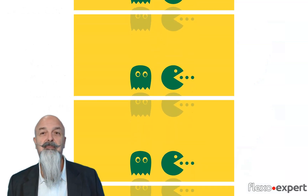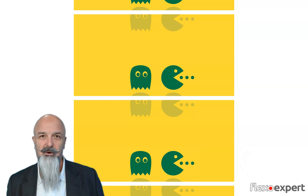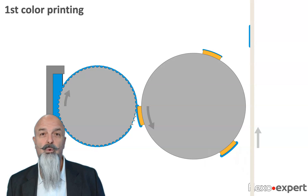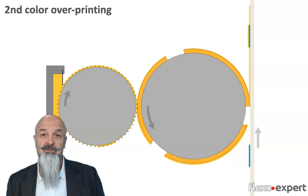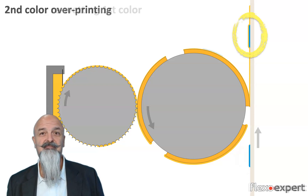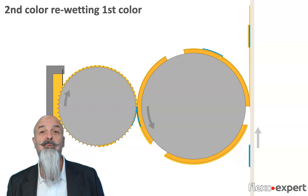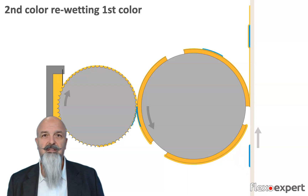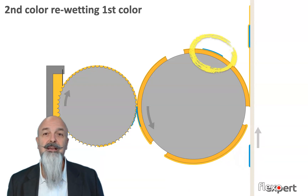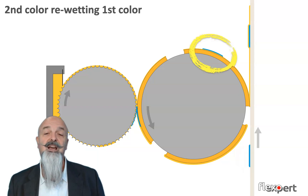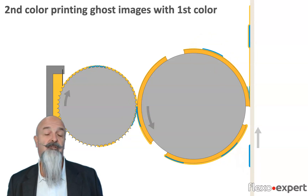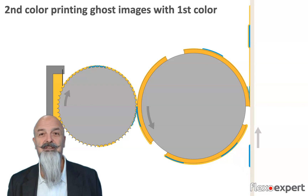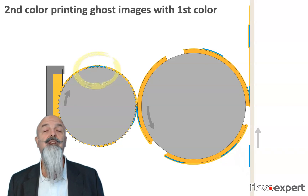There's another type of ghosting that happens because of interaction between colors. Let's say we are printing one color on deck one — a blue, a cyan — and then another color on deck two, a spot color, maybe yellow. Yellow over cyan is supposed to result in a green color in the overprint area. It may happen that the cyan is not properly dry or cured before reaching the next printing deck, so the yellow plate can re-wet the previous ink and pick some of the cyan from the substrate. The cyan can eventually be transferred to the anilox roll and risks entering the ink chamber. While the fresh yellow ink tries to refill the empty cells, a small undesired quantity of cyan remains in the cells.